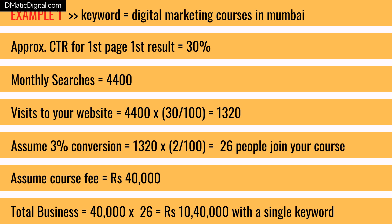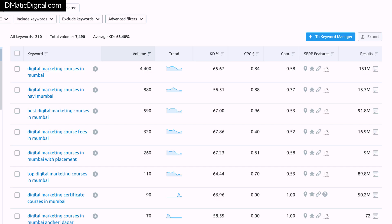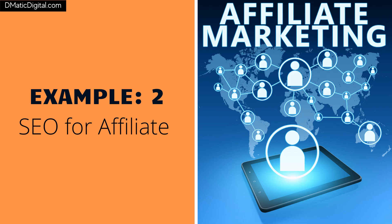Suppose after doing SEO your website ranks first on the first page of Google. The first result receives around 30% CTR (click-through rate), meaning your website will receive 1,320 visitors per month from this single keyword. With a 2% conversion rate, around 26 people will join your digital marketing course every month. At around ₹40,000 per course, you can get potential business of around ₹10,40,000 from a single keyword. With more similar keywords, you can make even more money.